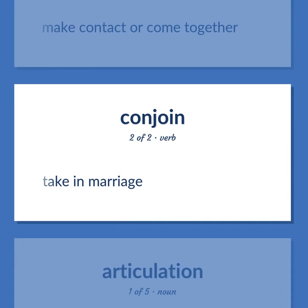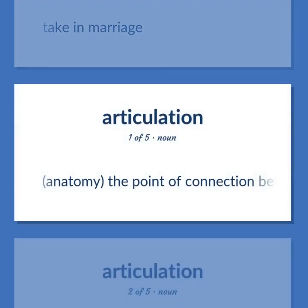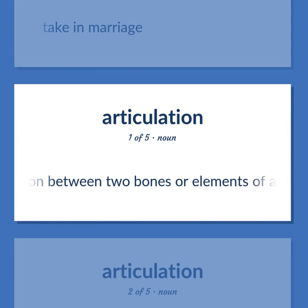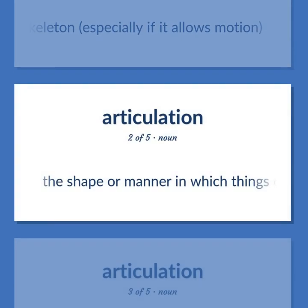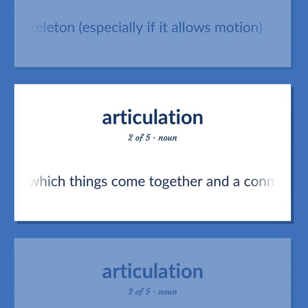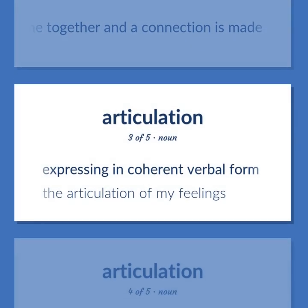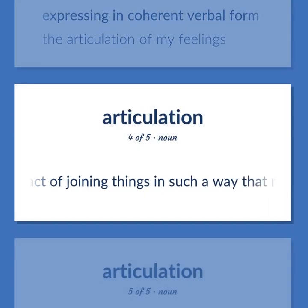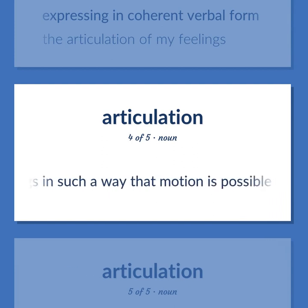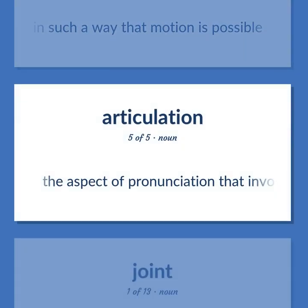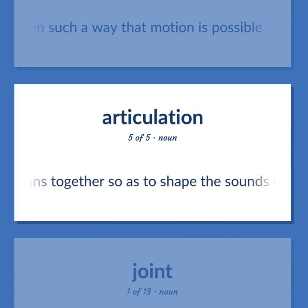Joint / Articulation: Take in marriage. The point of connection between two bones or elements of a skeleton, especially if it allows motion. The shape or manner in which things come together and a connection is made. Expressing in coherent verbal form — the articulation of my feelings. The act of joining things in such a way that motion is possible. The aspect of pronunciation that involves bringing articulatory organs together so as to shape the sounds of speech.